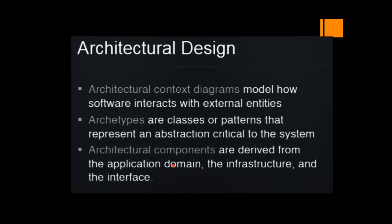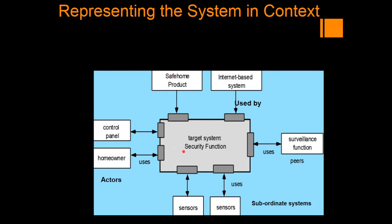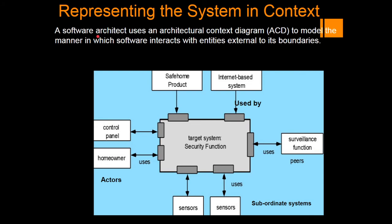Based on what application we are going to work on, based on that application domain, these components are derived. Let us see the diagram of the safe home system. Here we are representing the system in the context diagram — this is the ACD. The target system is a security function system with boundaries and many subsystems. A software architect uses an ACD to model the manner in which the software interacts with entities external to its boundaries.